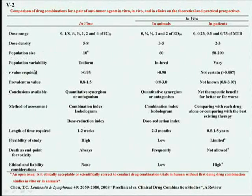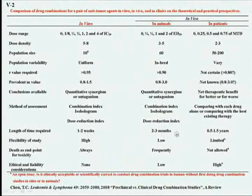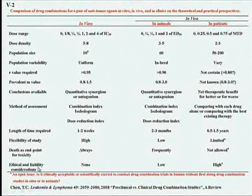The comparison covers cell density, population size, variability, R value, and the M value parameter. Conclusions available: quantitative in vitro, quantitative in animal, not practical or applicable in patients. Length of time: two weeks in vitro, months in animal, years in clinic. Flexibility, and death as an endpoint: always used in vitro, frequently in animal, but in humans you cannot use death as an endpoint, of course. Ethical liability is none in vitro, low in animal, and very high for humans.